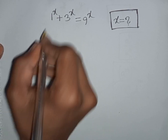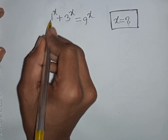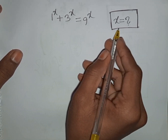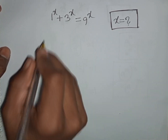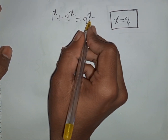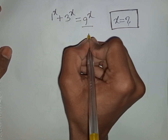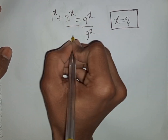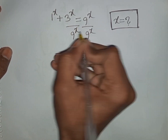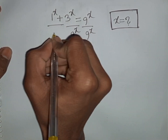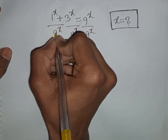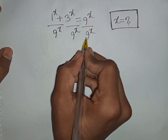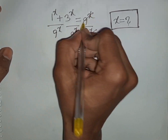How to solve 1^x + 3^x = 9^x. Find the value of x. At first we divide both sides by 9^x. So 9^x divided by 9^x will be cancelled.